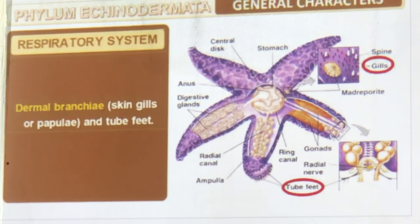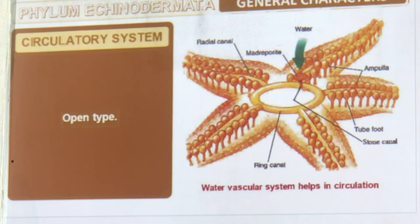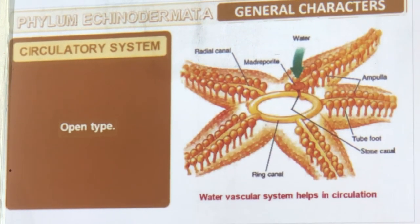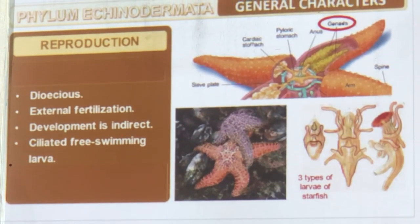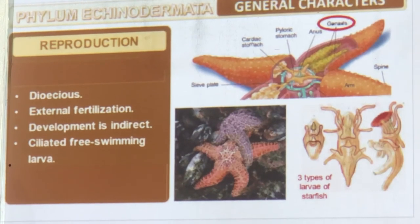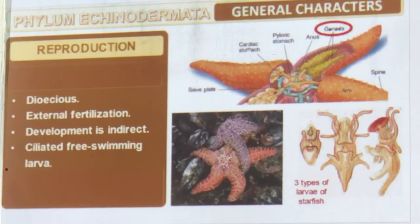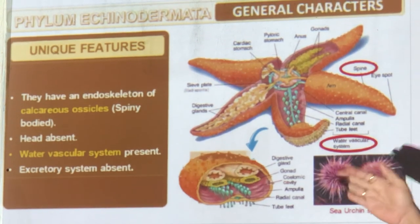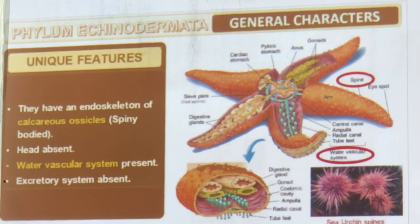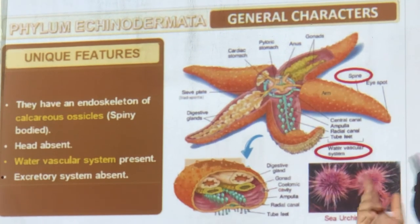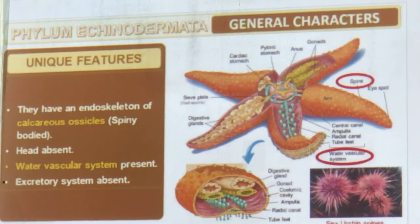Digestive system is complete. Mouth is ventral and anus is dorsal — they are upside down as we always draw them. They have dermal branchia (skin gills or papulae) and tube feet in the arms for respiration. The tube feet act like a zip — water exchange takes place through radial canals. Open circulatory system — water can touch everything directly. They are dioecious, fertilization is outside, development always has a larva, and the larva is ciliated and free-swimming.